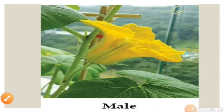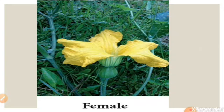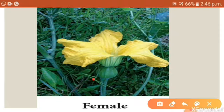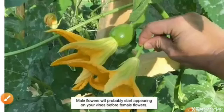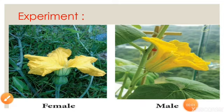Male flowers are borne straight off the vine, but female flowers have a small fruit swelling at the base near the stem. Can you see this small swelling near the stem? That is how we identify the female flower. Now we can easily identify which one is male and which one is female.